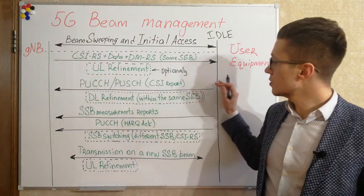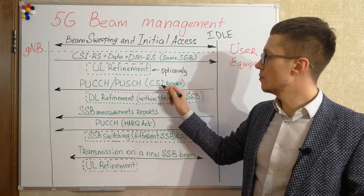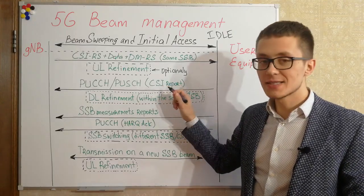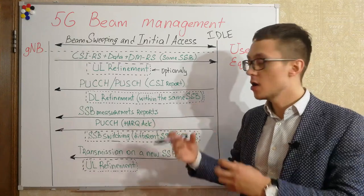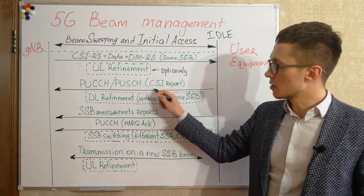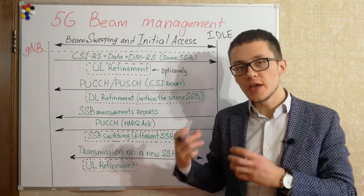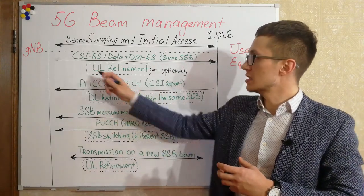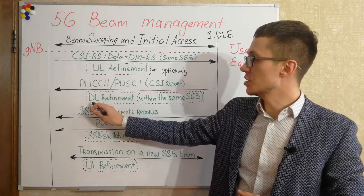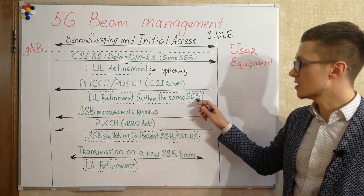In parallel, user equipment measures CSI-RS narrow beams and sends reports towards the gNodeB about the quality of CSI-RS channels and narrow beams — basically a channel state information report. After that, if gNodeB decides to change to another CSI-RS narrow beam transmission, the 5G base station can decide to perform downlink refinement — let's suppose this is refinement within the same SSB wide beam.